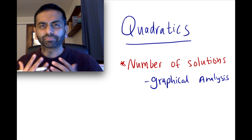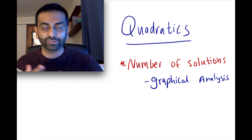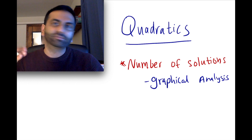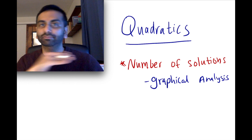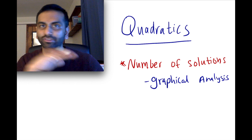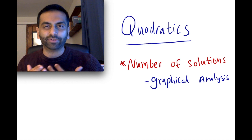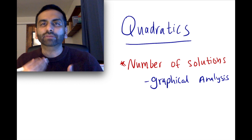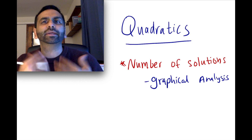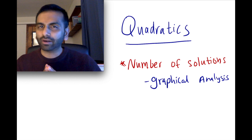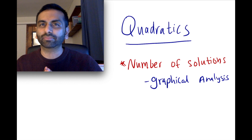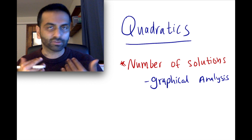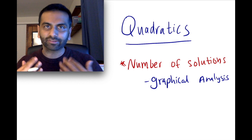First of all, the number of solutions. Unlike a line, which typically has one solution or no solution if it's a flat line, with a quadratic you might have noticed that you mostly end up getting two solutions. But there are cases where you sometimes only get one solution or even no solutions. So let's just do a quick example.